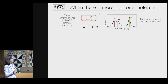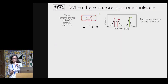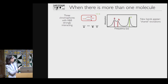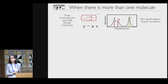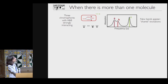This is well known for single molecules. What is more challenging is to study a multi-chromophoric system. Here, for example, I have an example of three chromophores A, B, C, with A and B interacting while C is not interacting. And the linear absorption spectrum that you get has two new features, which can be interpreted as shared excitation between A and B.